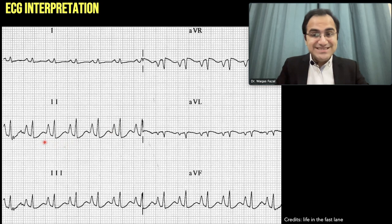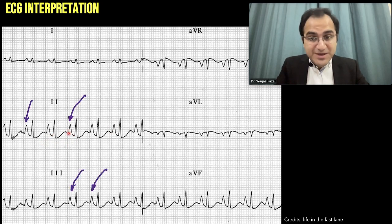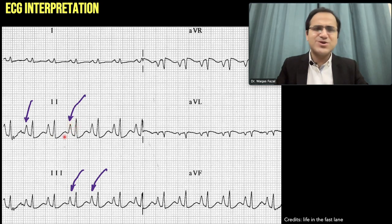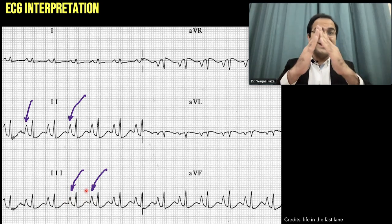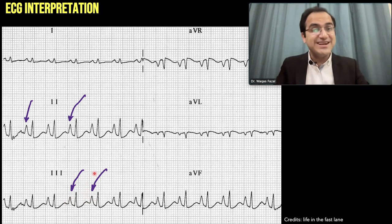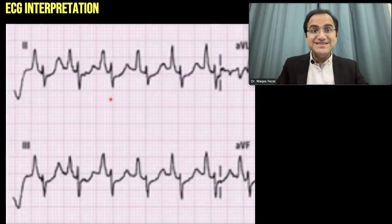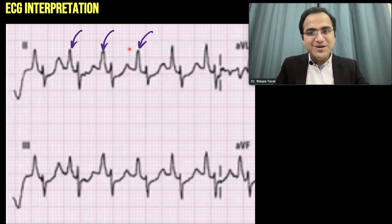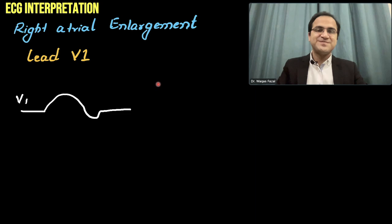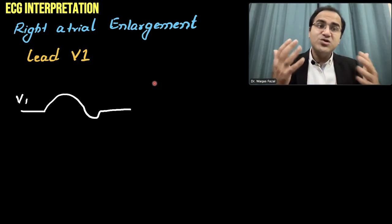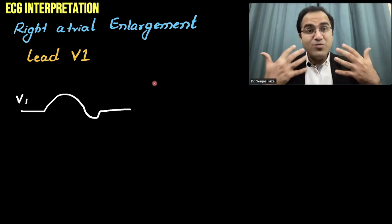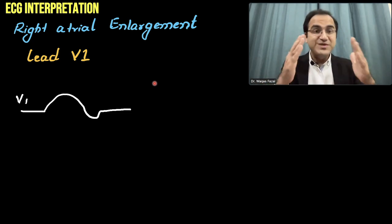If you look at this ECG, you will be able to appreciate the peaking of the P wave. This is the P wave, followed by a QRS complex. Look at the tall, peaked P waves that have pointed ends — that is a classical feature of right atrial enlargement called P pulmonale. This is another ECG with a closer look. In leads 1, 2, and 3, you will be able to appreciate the P pulmonale — the tall, peaked P waves.